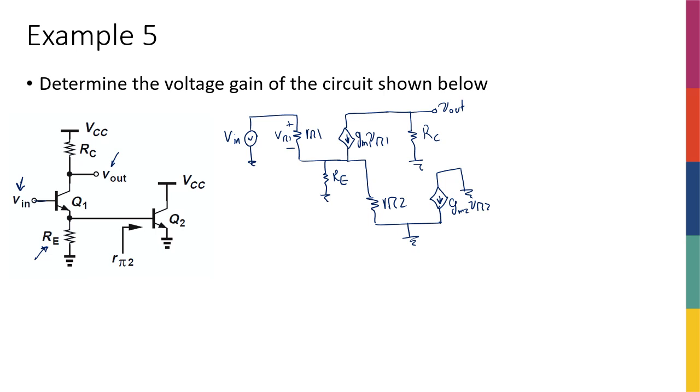Now, what is the gain? Well, Vout is equal to this current times RC, so it's going to be I, let's call this Ix, Ix RC.